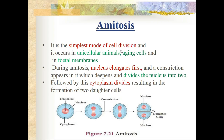Amitosis is the simplest mode of cell division and it occurs in unicellular animals like protozoa, aging cells, and fetal membranes. During amitosis the nucleus elongates first and a constriction appears which deepens and divides the nucleus into two. This is followed by the division of the cytoplasm, resulting in two daughter cells.